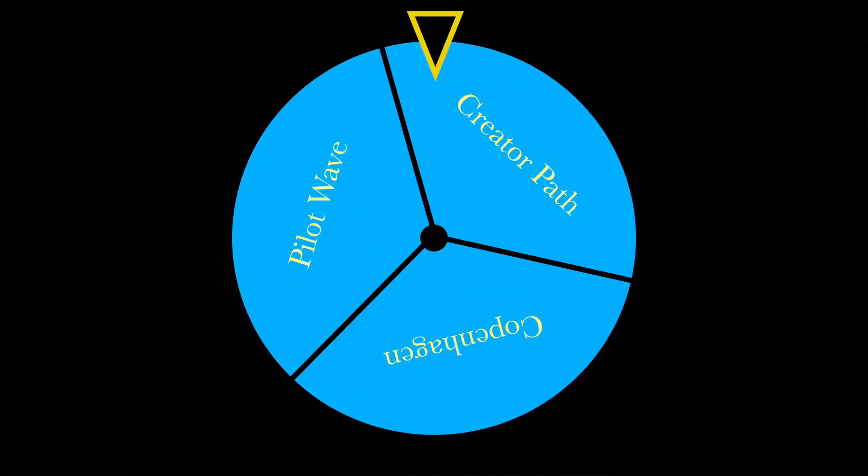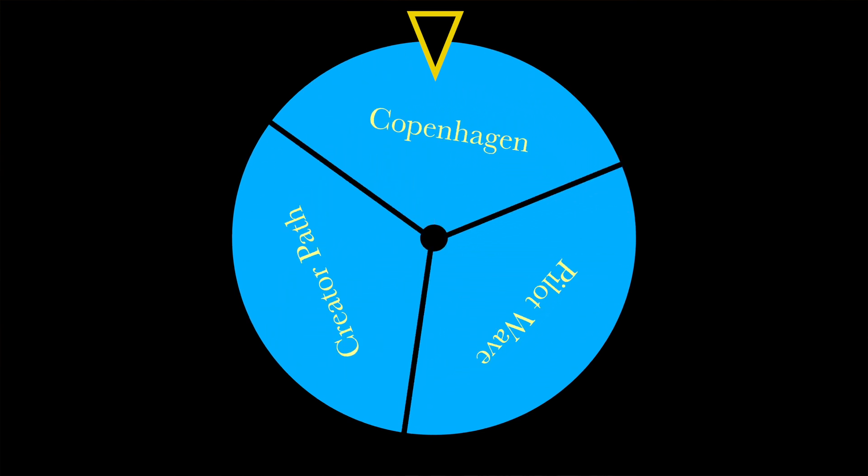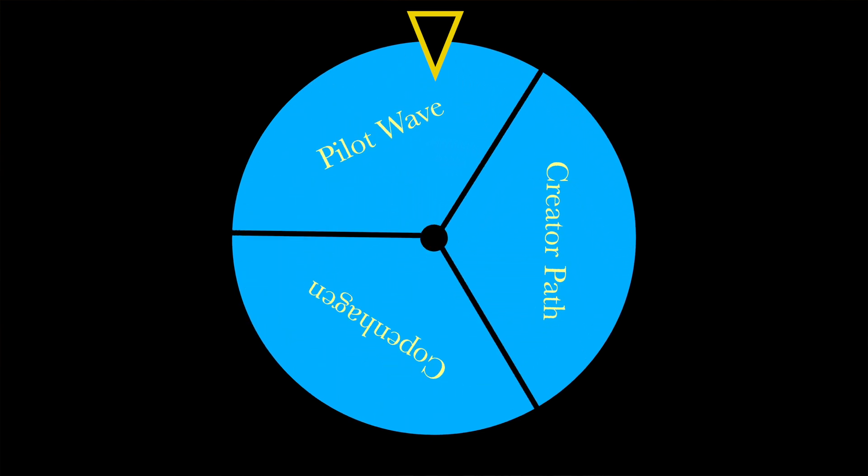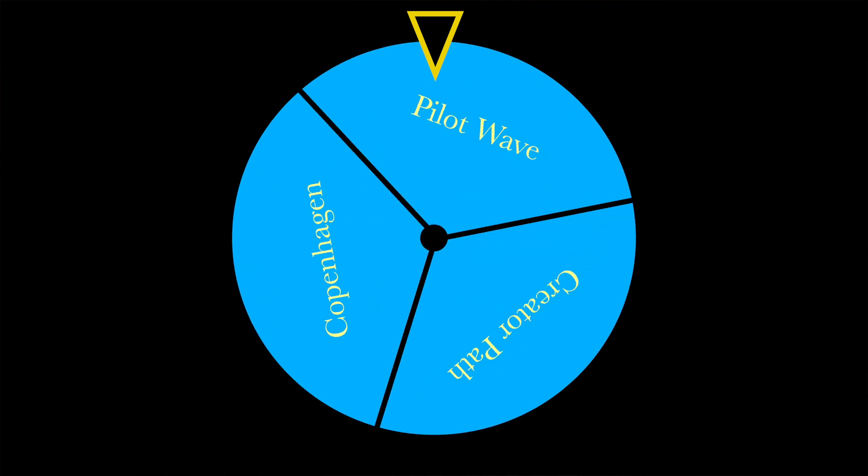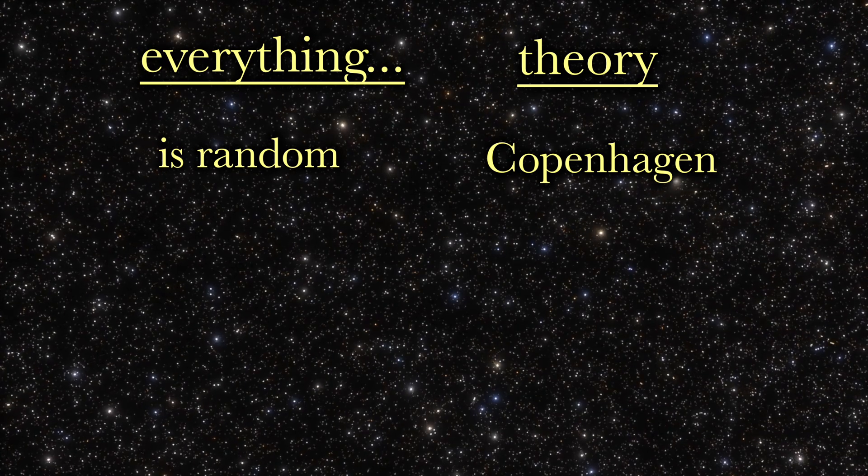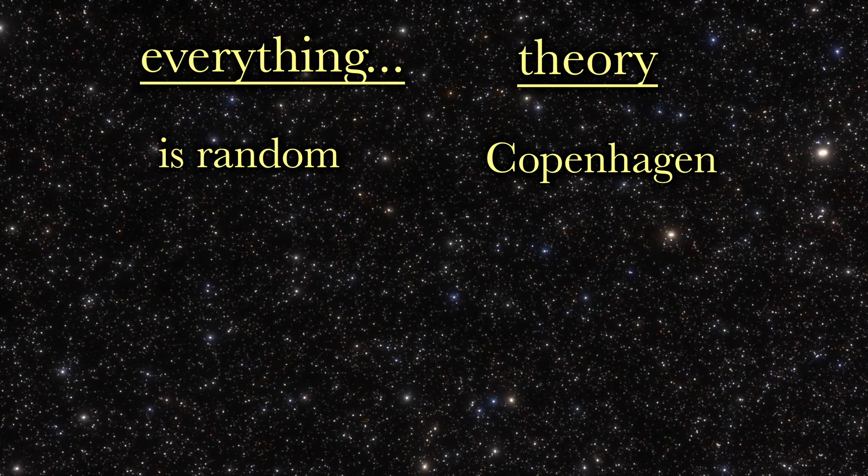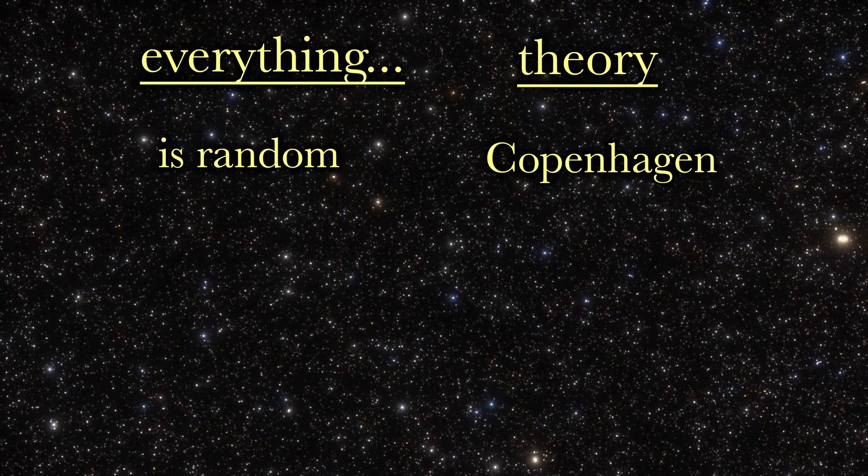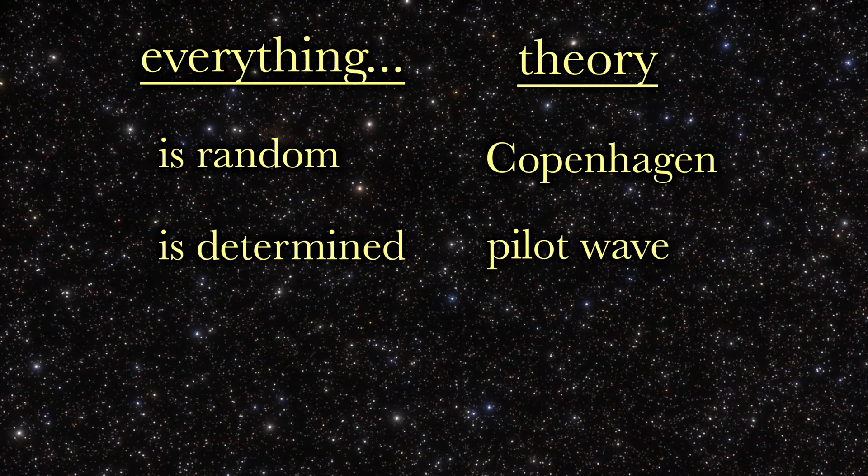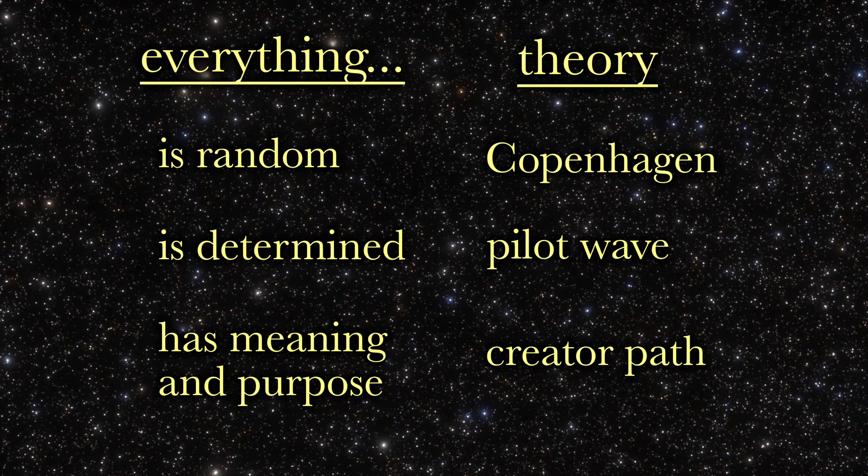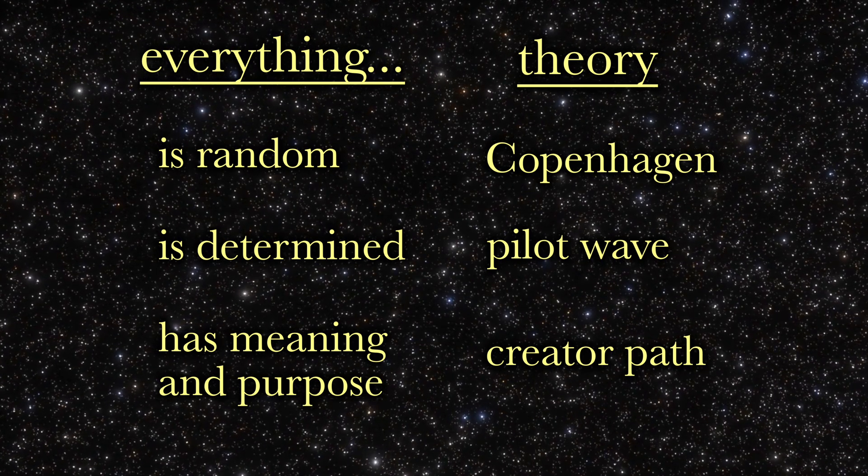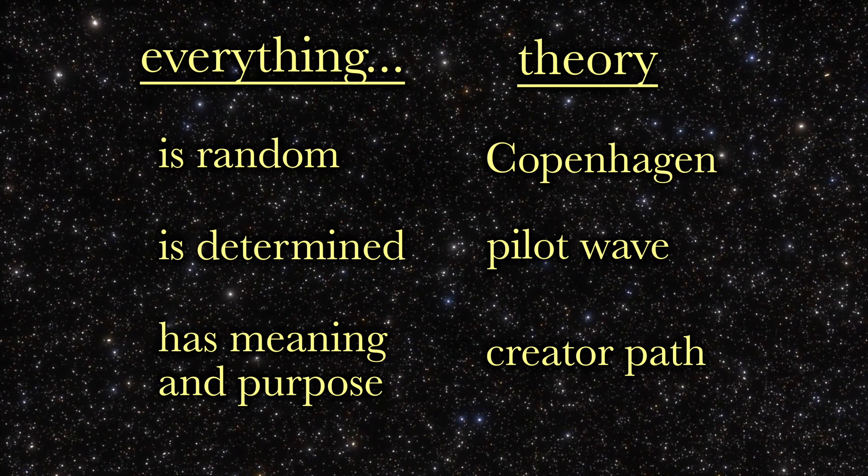Currently, there is no experiment that can distinguish between these three interpretations. And I agree that scientists will find the creator path theory to be irritating. They would rather the universe be random, as in the Copenhagen interpretation, or predetermined, as in the pilot wave theory. They find it offensive to consider that the universe has meaning and purpose, as in the creator wave theory.